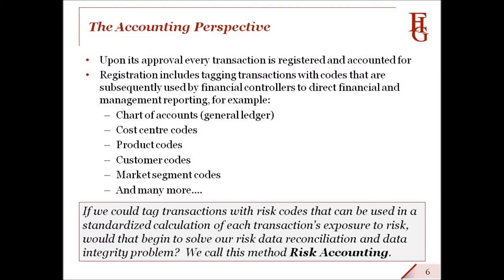When thinking about risk data aggregation in the accounting context, we started to think whether we could tag a new transaction value onto each transaction — its exposure to risk. We asked ourselves: if we could tag transactions with risk codes that can be used in a standardized calculation of each transaction's exposure to risk, would that begin to solve our risk data reconciliation and data integrity problem? If that were possible, we could call the method risk accounting.